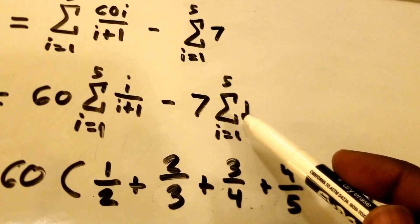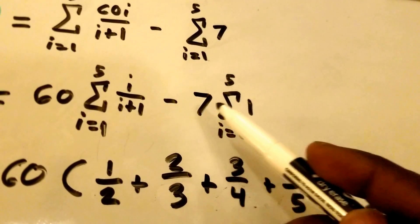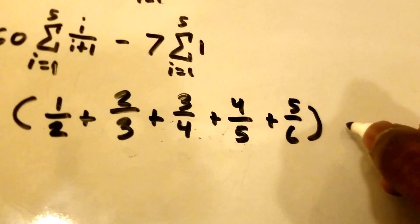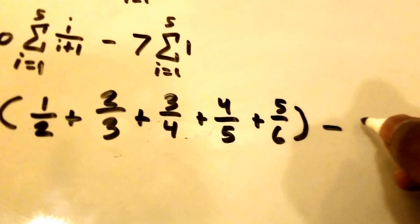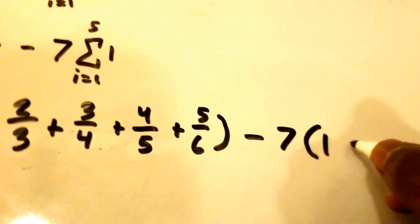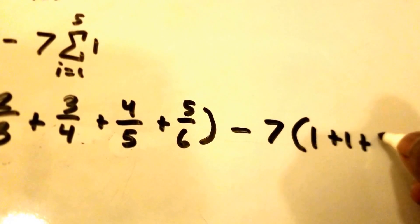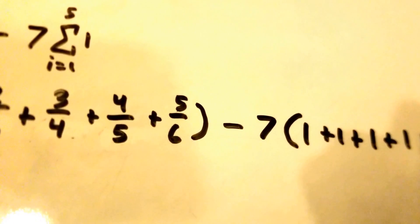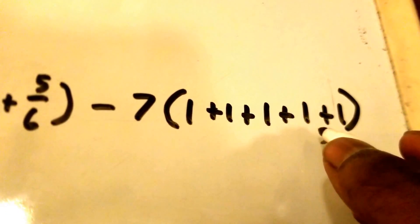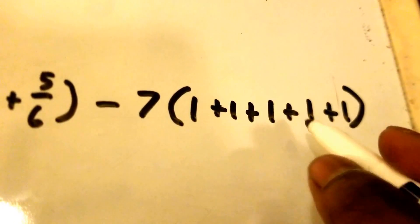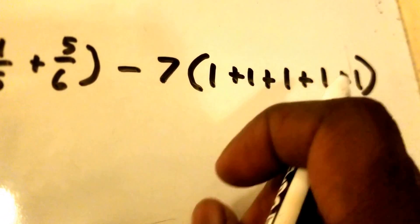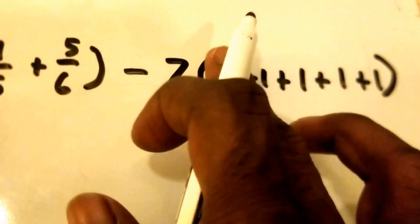Now we have to worry about the other part: minus 7 times the summation from i equals 1 to 5 of 1. That's just minus 7 times 1 plus 1 plus 1 plus 1 plus 1. That's just 1 added 5 times, which equals 5.